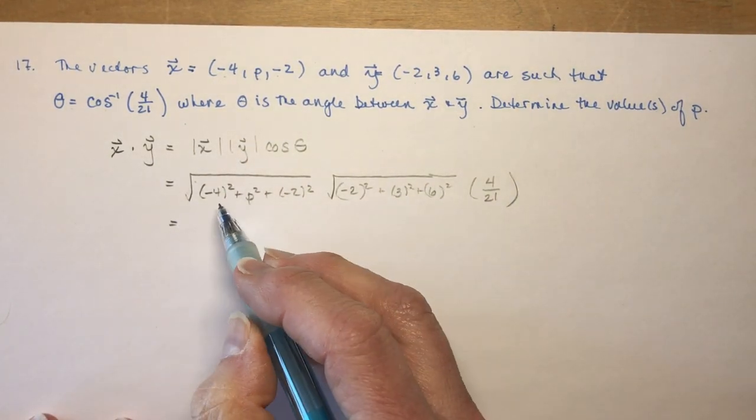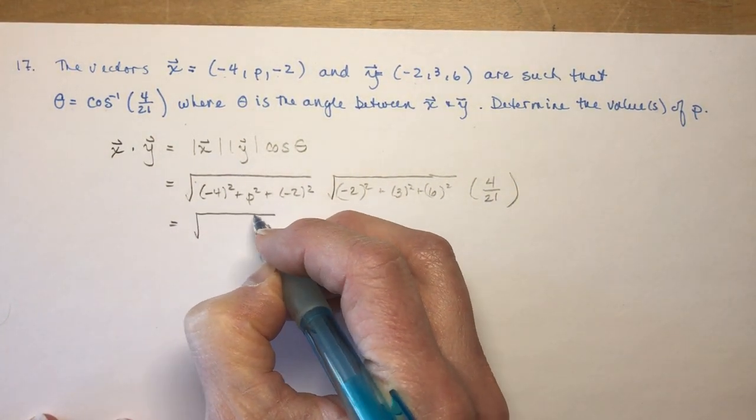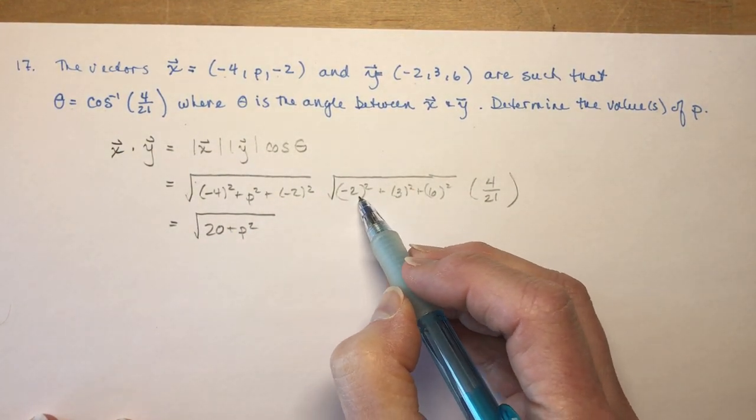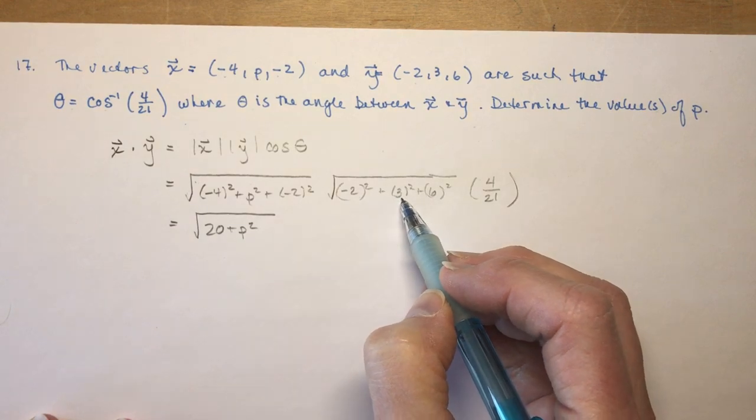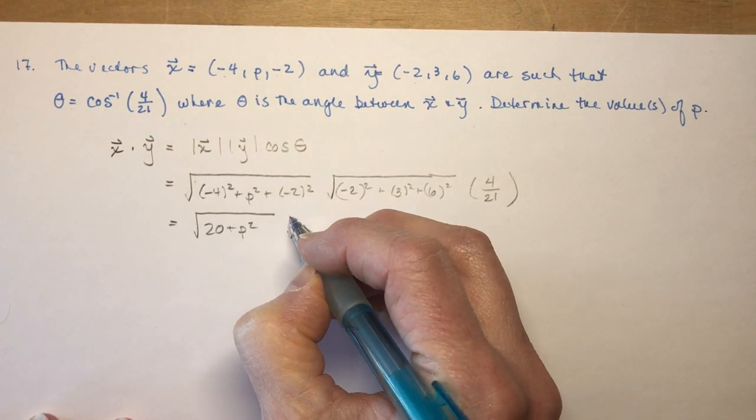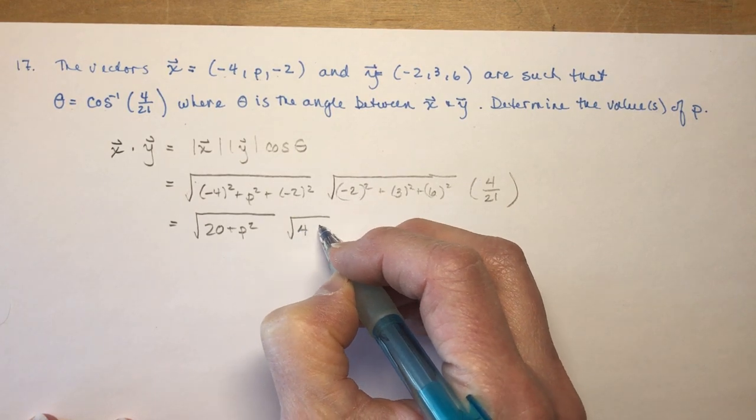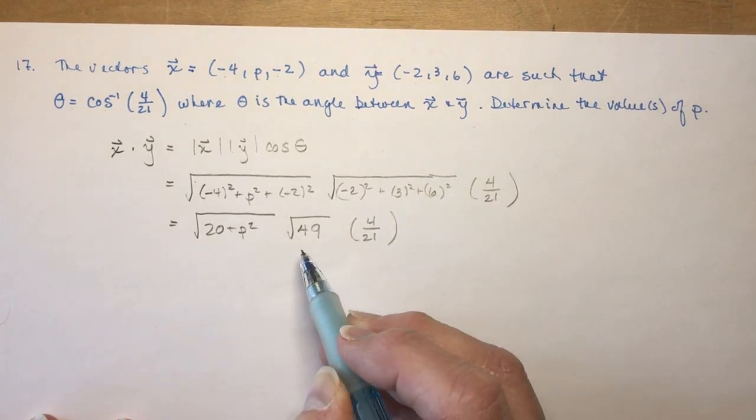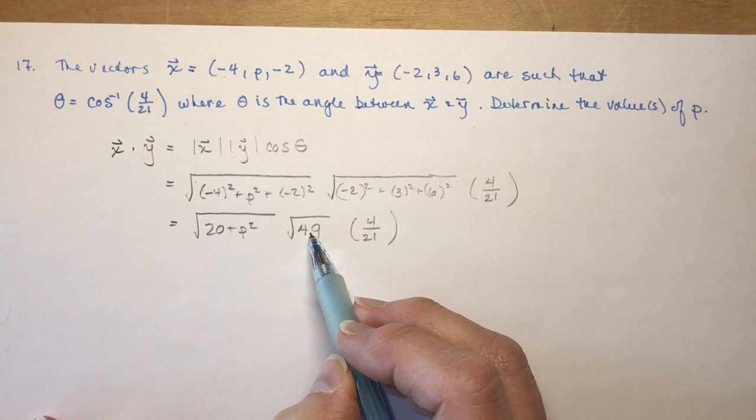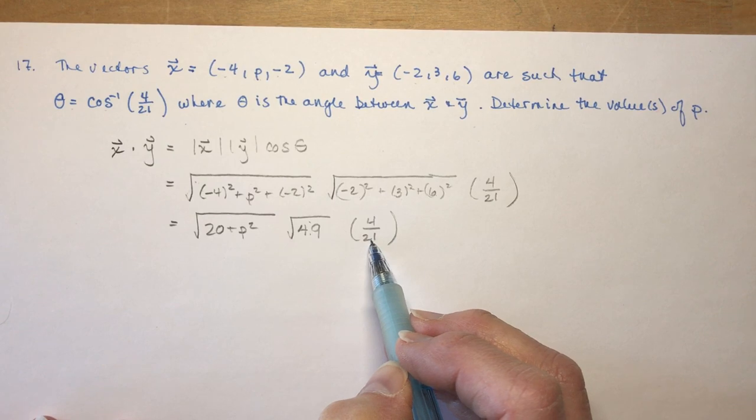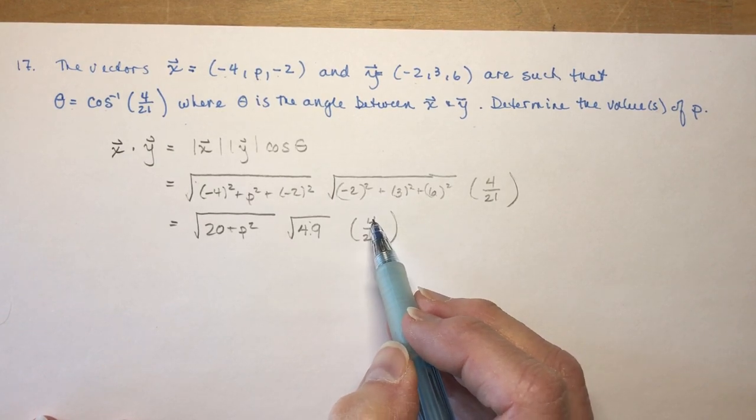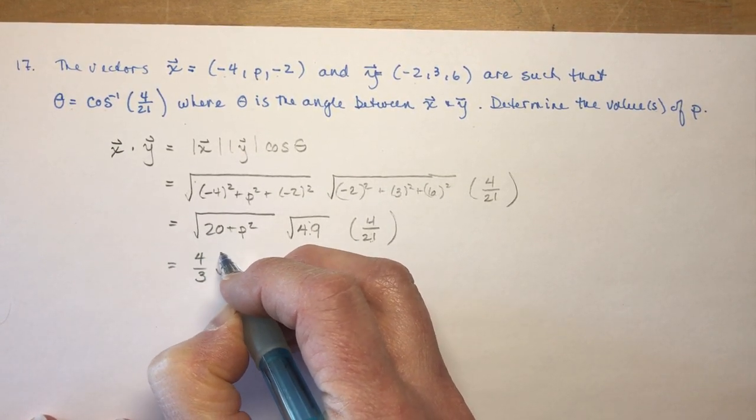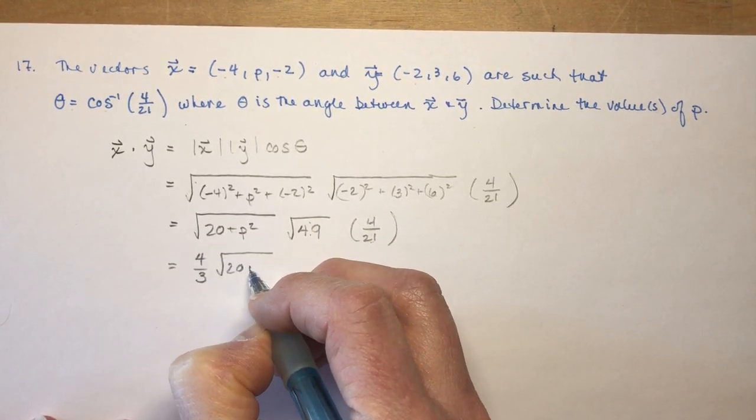Okay, so this is 16 plus 4, that's the square root of 20, plus P squared. And this is going to be 4, and 9 is 13, and 36 is 49, so times the square root of 49, all times 4 over 21. Now this is nice, because the square root of 49 is just 7, and 7 will divide into 21 three times, so this just gives me 4 over 3. Okay, so 4 over 3 times the square root of 20 plus P squared.